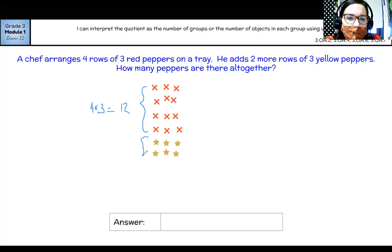And then here I have two rows of three. So three, six. So two times three equals six. So I'm going to add my 12 plus my six and all together, 12 plus six makes 18.